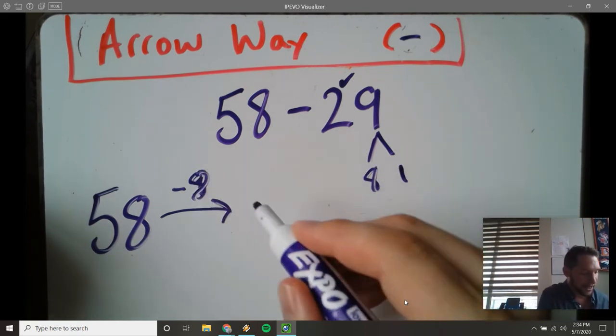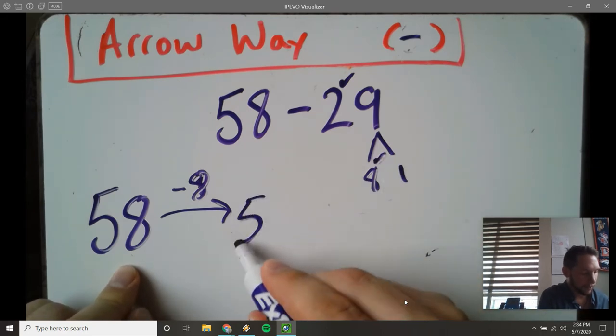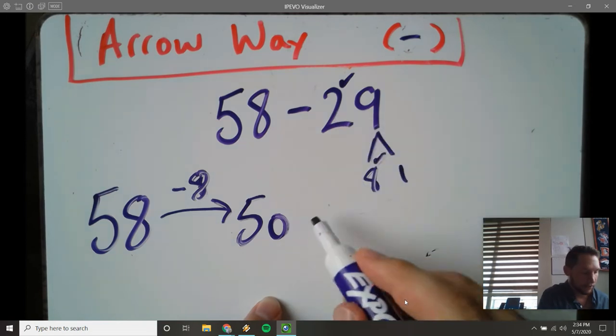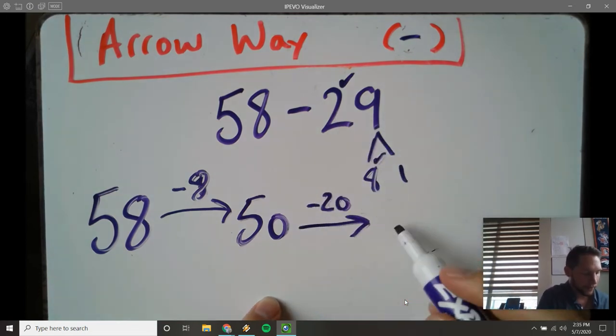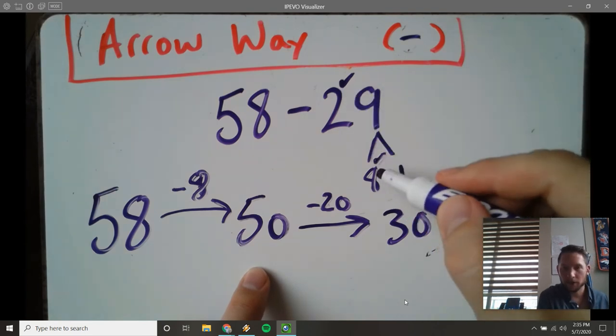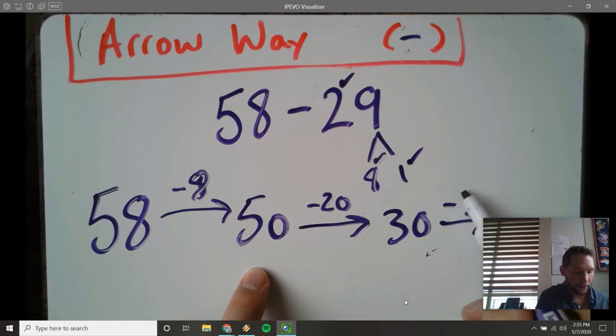And I would subtract 8. 58 minus 8 equals 50. And then I would subtract my 10s, minus 20 equals 30. I took away my 20, took away my 8. I need to take away 1. Minus 1 equals 29.